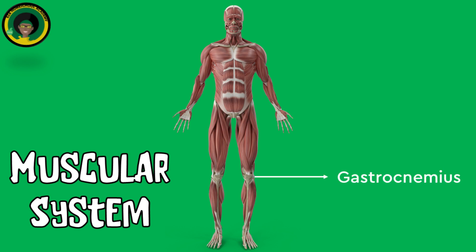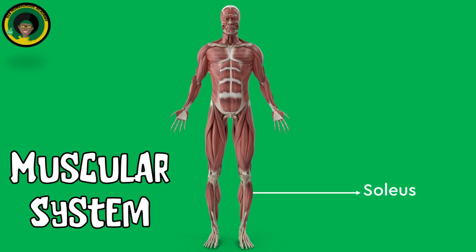Gastrocnemius, located in the calf, allows for plantar flexion of the foot. Soleus, located in the calf, aids in plantar flexion of the foot. Tibialis Anterior, located in the front of the leg, allows for dorsiflexion of the foot.